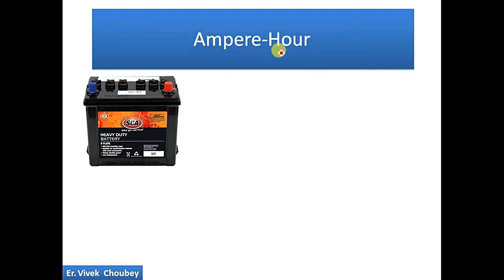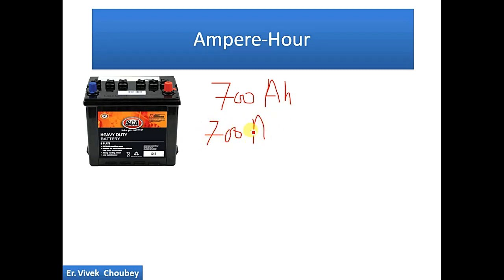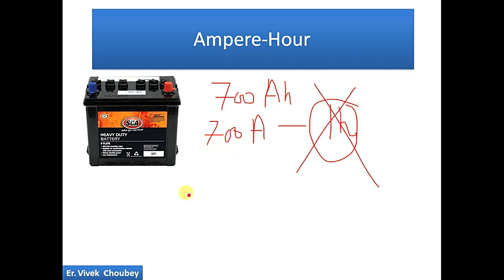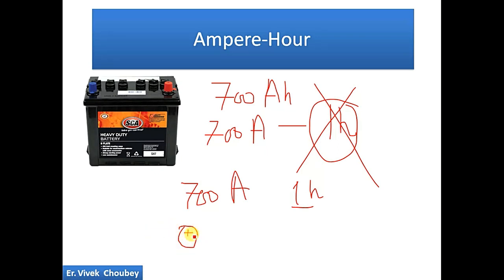Let's take an example of a 700 ampere-hour battery. If we take 700 amps of current from this battery, theoretically it will discharge in one hour. But that is an ideal case — it doesn't hold true in practice. If we are taking 700 amps of current, you will find that the battery will discharge long before one hour; it will discharge in less time.